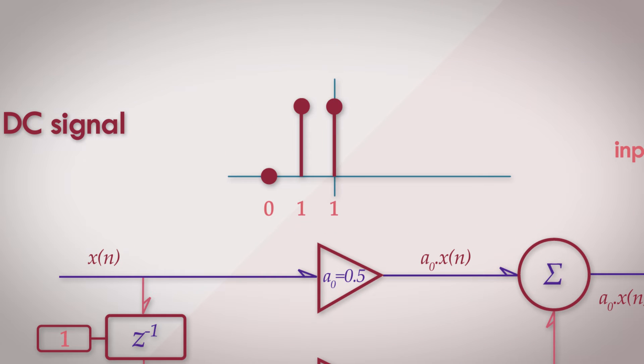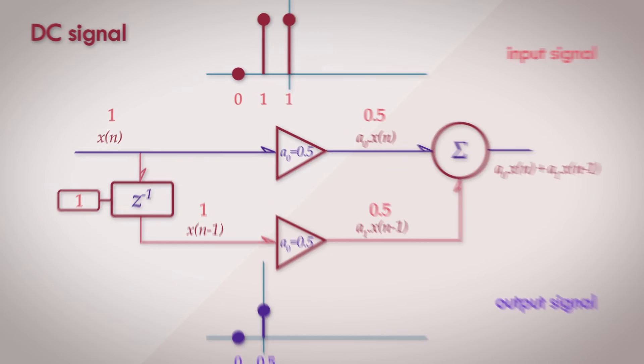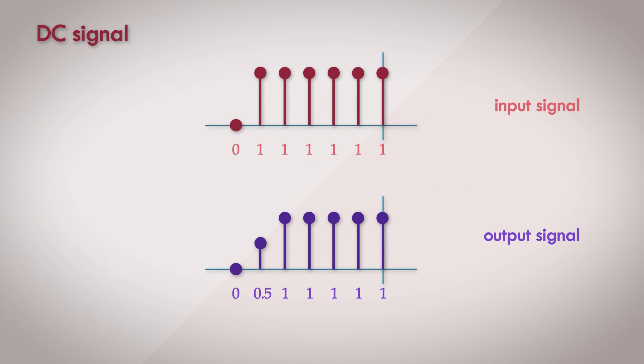Next pass, we have 1. So the direct path remains the same, 1 times 0.5 and in the delayed path, the previous state was 1 and so the result is 1 times 0.5. The output of the difference equation is 1 and we update the state register to a value of 1. After this sample, every other sample would yield the same result of output equals to 1, since the input signal doesn't alter. So for an input sequence like this, we get an output sequence which is quite similar, where the output amplitude eventually settles out to be a constant of 1 or unity gain condition.